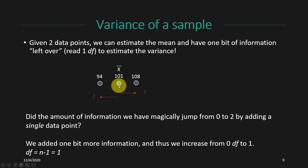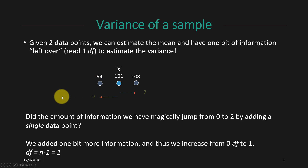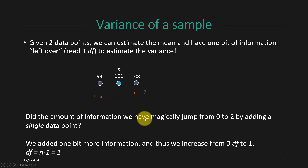With two data points, I still don't know mu, but I can calculate x-bar as an estimate — in this case it's 101. I can see how much each score deviates from that mean and now have some information left to make an estimate about the variance. The standard deviation appears to be 7, since both scores deviate 7 from the mean. But did the amount of information for estimating the standard deviation magically jump from zero to two by adding a single data point? Of course it didn't.